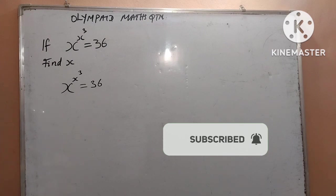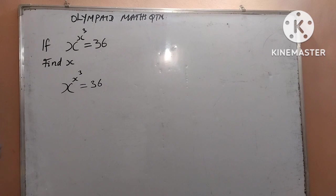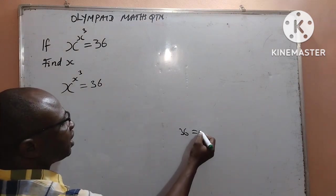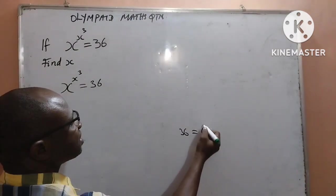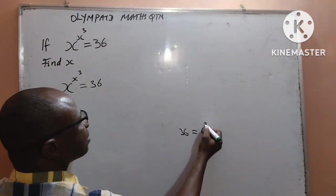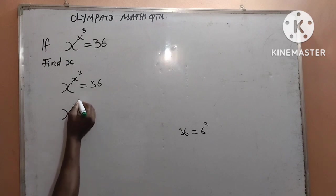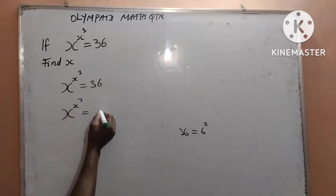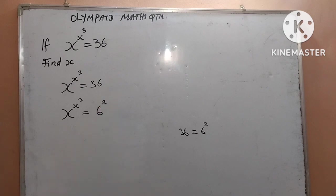Without wasting time, I want to start from the right hand side, and I will write 36 in base 6, which is 6 to the power of 2 — very simple. So I now write x to the power of x to the power of 3 is equal to 6 to the power of 2.